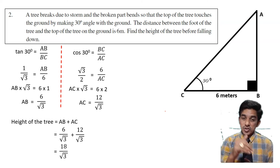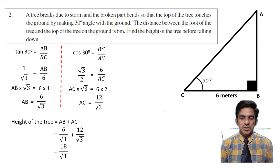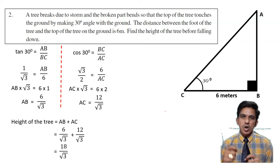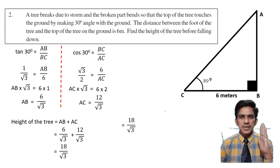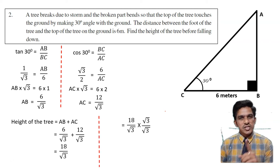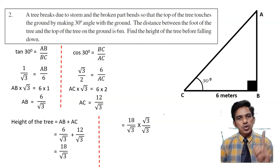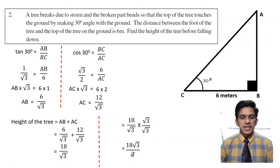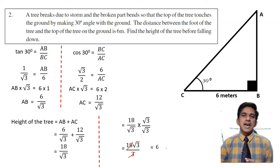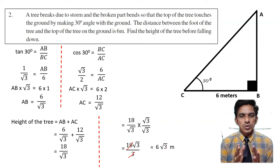The height of the tree is 18 by root 3. Since we have an irrational number in the denominator, let us rationalize by multiplying numerator and denominator by root 3. We get 18 root 3 by root 3 into root 3, which is 18 root 3 by 3. Cancelling, 3 goes into 18 six times. Therefore the height of the tree is 6 root 3 meters.